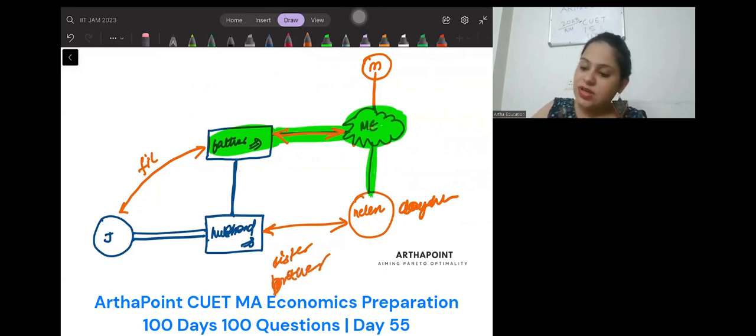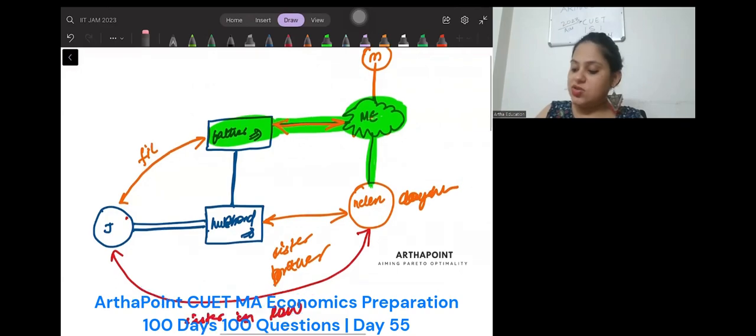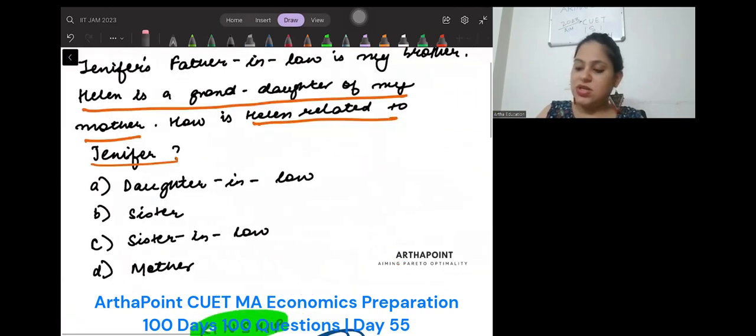That they are sister-brother. And if they are sister-brother then again these two become their sister but in-law. This becomes sister-in-law. Right. So the answer to this question would be sister-in-law. I hope this is clear to you.